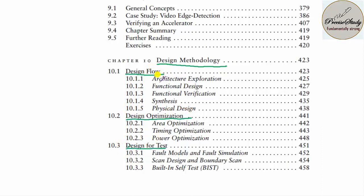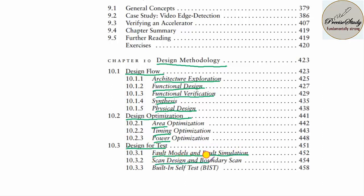In the case of design flow, we are going to talk about architecture exploration, functional design, and functional verification. We are going to talk about the difference between simulation and synthesis, and physical design. In the case of design optimization, we need to optimize for area, timing, and power. For design for test, the first one is fault models and fault simulation, scan design and boundary scan, and built-in self-test.